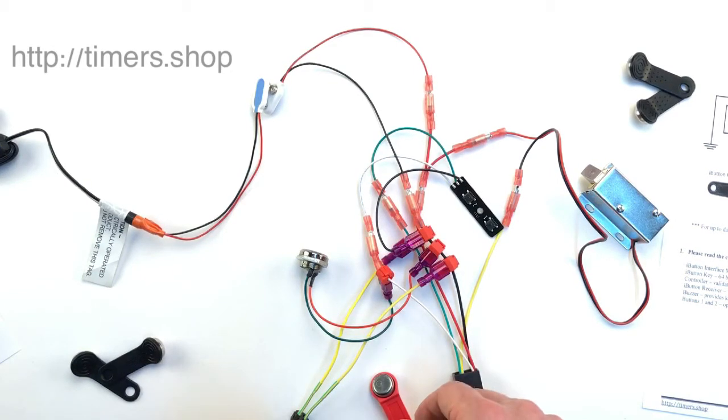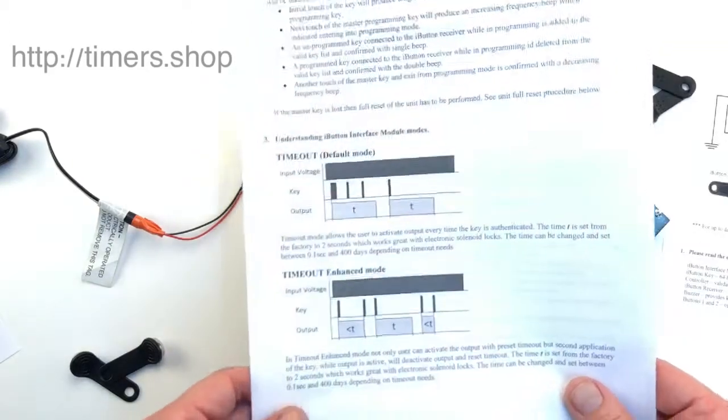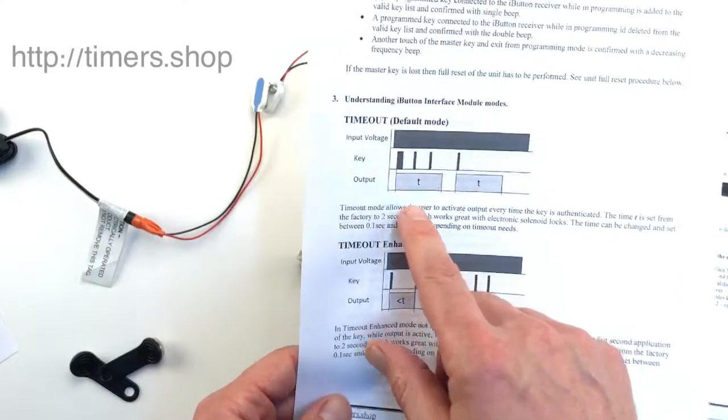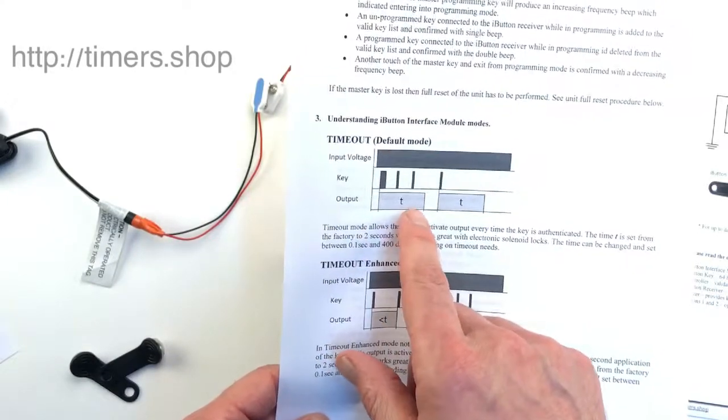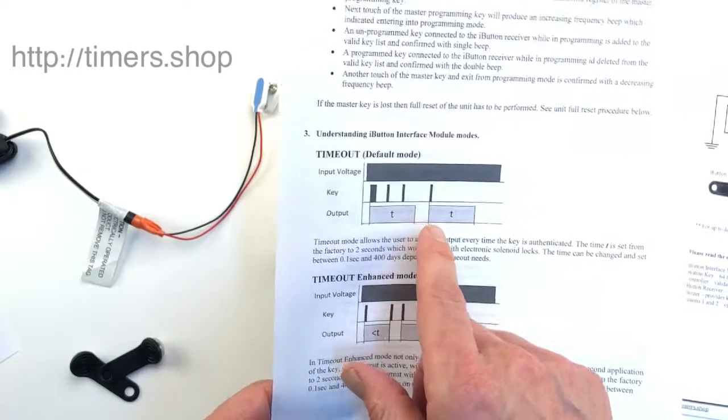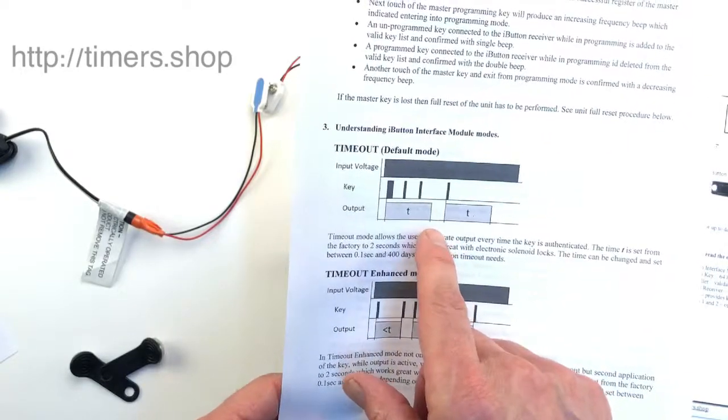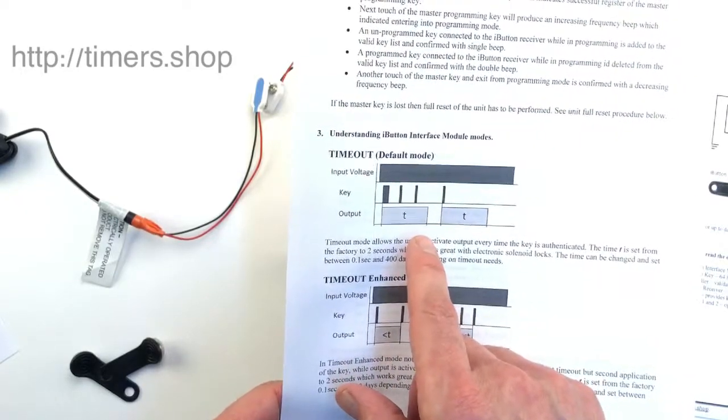The manual explains that this lock has three different modes. The first mode is standard timeout mode: when you apply the key, it activates the output for a period of time. By default it's set to two seconds, but you can change it to two hours or even days.